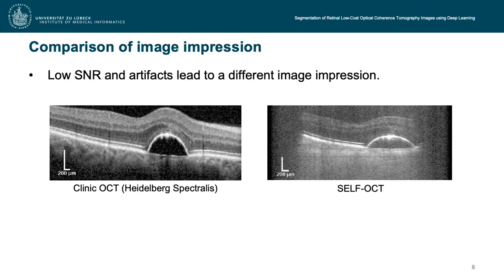Now we will look at the visual impression of the SELF-OCT in comparison to a clinical OCT. On the left you can see a B-scan of a Heidelberg Spectralis OCT and on the right a B-scan of the SELF-OCT of the same AMD patient. Comparing both scans, one notices the significantly different image impression. Due to the very cost-effective and compact optical design, images of the SELF-OCT show a lower signal-to-noise ratio and specific artifacts.